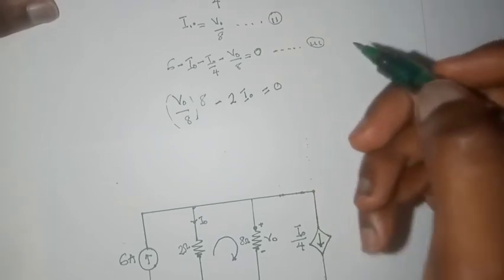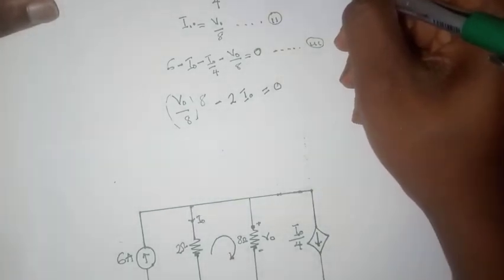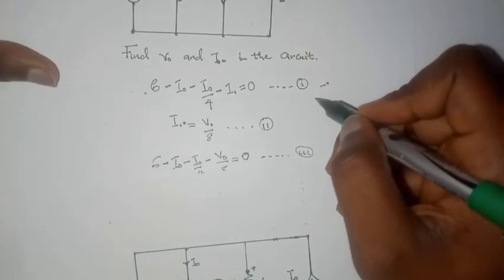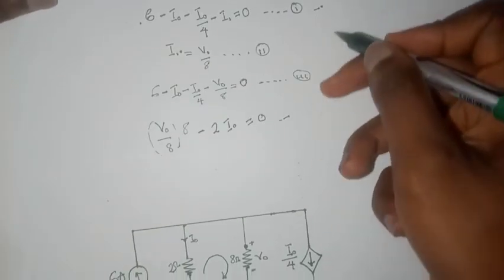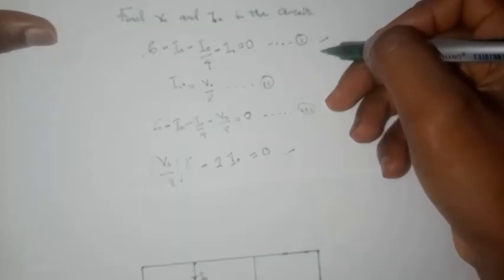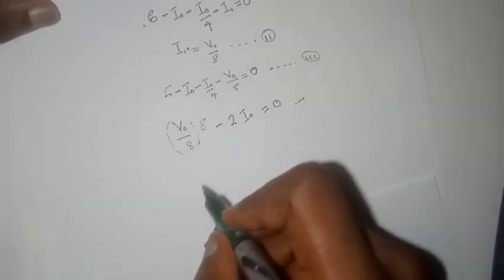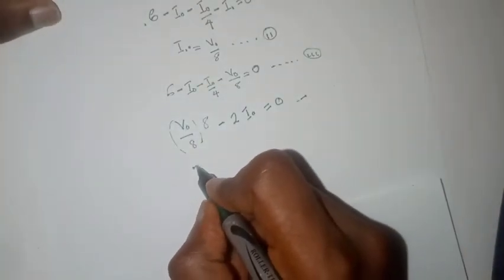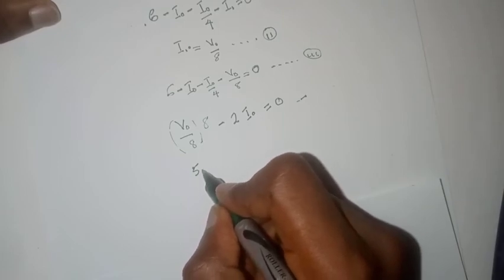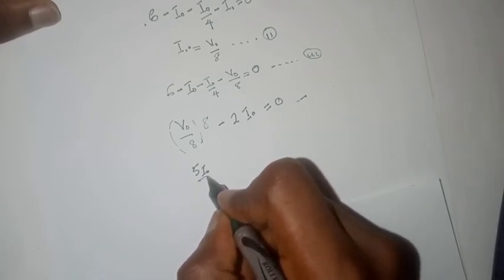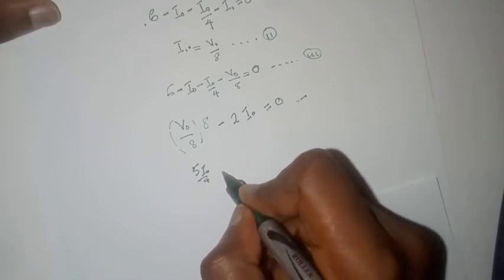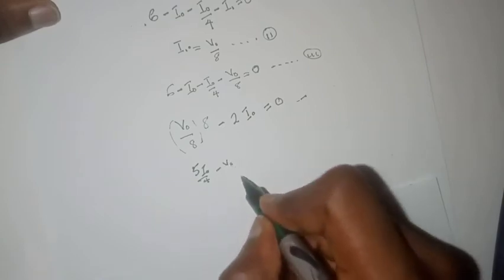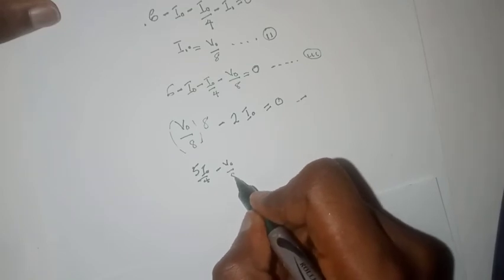We can solve these two equations together. This equation and these equations can be solved together. We can simplify this equation as 5 I0 divided by 4 minus V0 divided by 8.